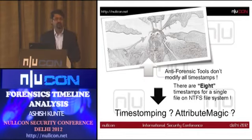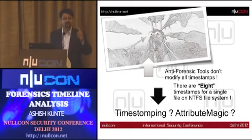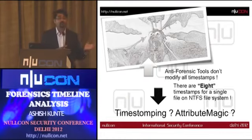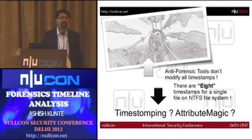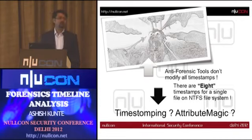If you are a professional investigator and go into each and every artifact, there are eight timestamps for a single file in the NTFS file system. And if a file is opened, modified, and then deleted, you have almost more than 60 timestamps total. Timestomping tools cannot modify everything. Not every anti-forensic tool can actually modify all the timestamps, so there is always something for the investigator to find.